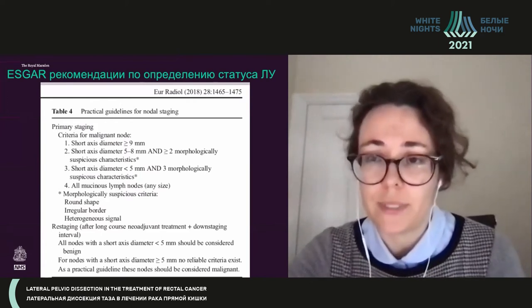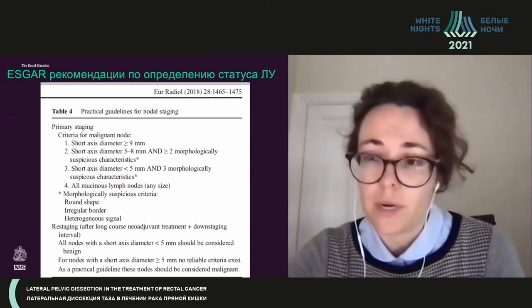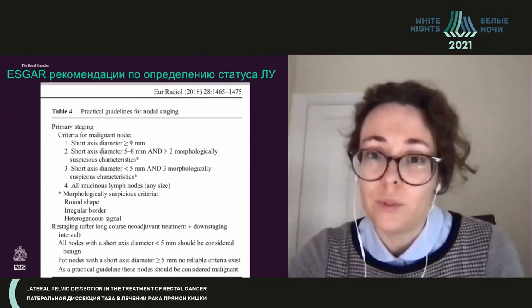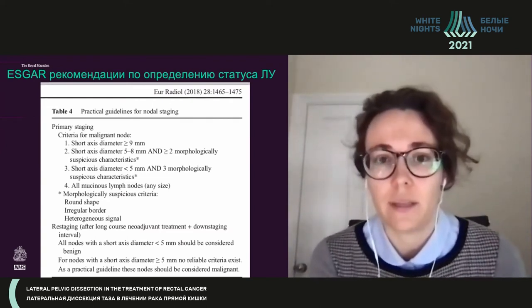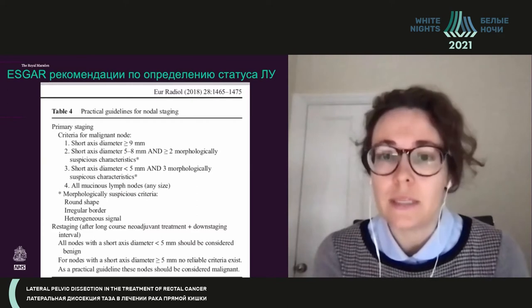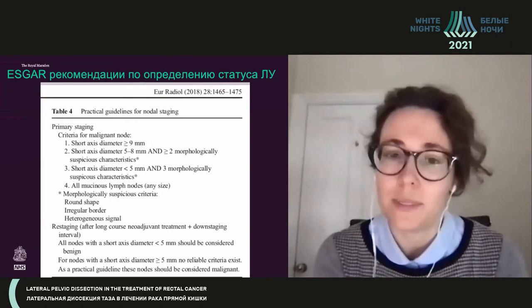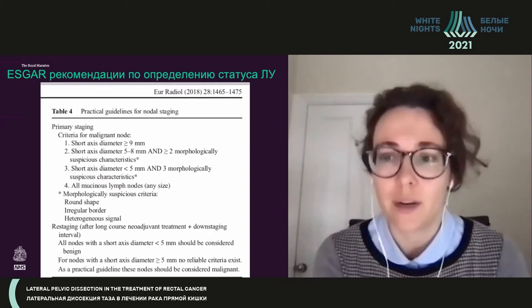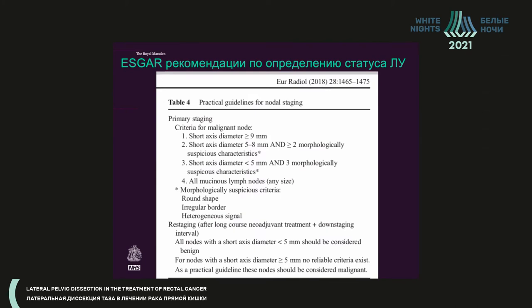If you look at the ESGAR guidelines on the status of lymph nodes — the association of European radiologists dealing with GI pathology — it is, in my opinion, absurd. They say that to detect a lymph node as pathological, it should be either bigger than nine millimeters, or five to eight millimeters in diameter having two morphologically suspicious characteristics. If it is below five millimeters, there must be three morphologically suspicious characteristics.